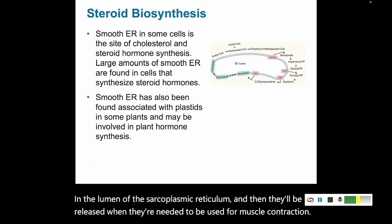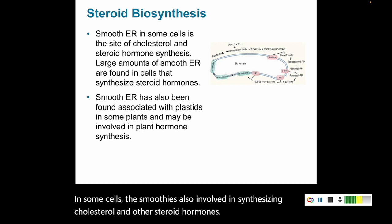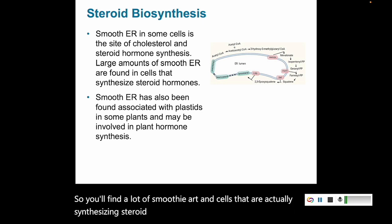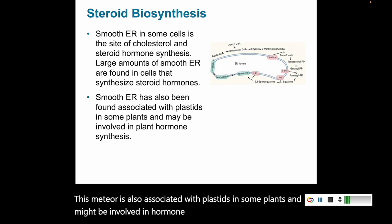In some cells, the smooth ER is also involved in synthesizing cholesterol and other steroid hormones. So you'll find a lot of smooth ER in cells that are actually synthesizing steroid hormones. The smooth ER is also associated with plastids in some plants and might be involved in hormone synthesis in plants.